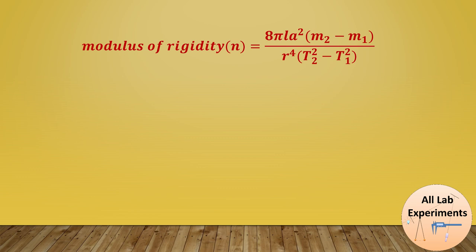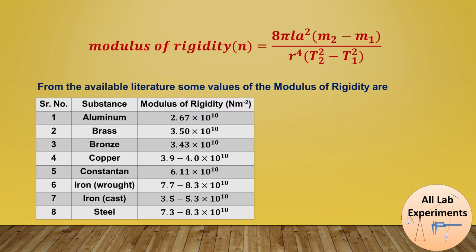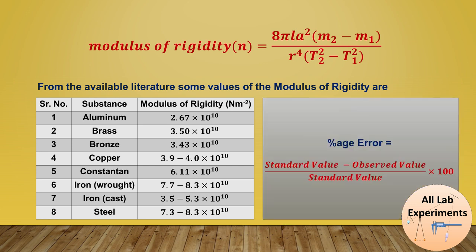The value of modulus of rigidity for some well-known metals is available in the literature. I am providing them in a table. You can use these values as the standard value and find out the percentage error in your findings using this formula.